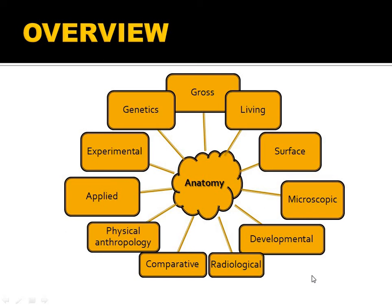Overview of the subdivisions of anatomy: Gross anatomy — study of structure via cadaver. Living anatomy — study of structure of living organisms. Surface anatomy — study of deeper parts relative to skin. Microscopic anatomy — study using microscope. Developmental anatomy — study of development. Radiological anatomy — using radiological imaging. Comparative anatomy — comparing organism structures. Physical anthropology — study of pre-historical remains. Applied anatomy — application of anatomical knowledge in practice. Experimental anatomy — study via experiments. Genetics — study of information in chromosomes.